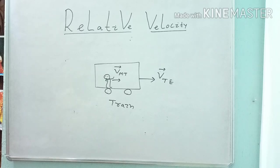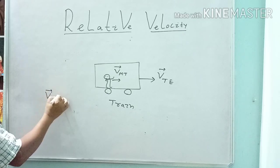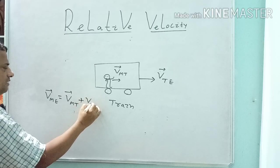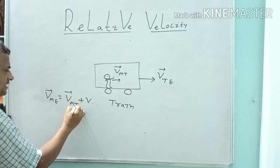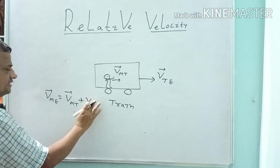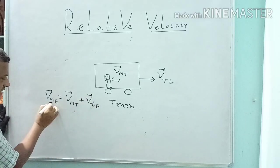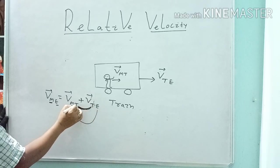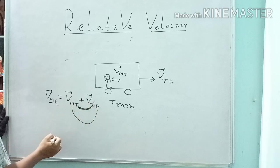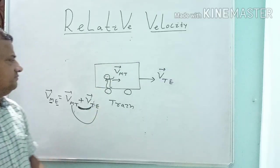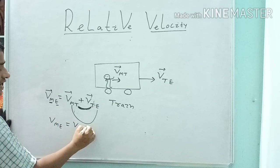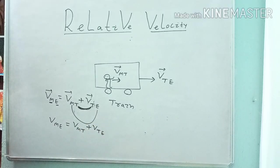So if you are told to find out the velocity of the person with respect to earth, VME = VMT + VTE. This is starting point, this is ending point, E is the middle. Since they are in the same direction, the velocity of the person with respect to earth equals velocity of person with respect to train plus velocity of train with respect to earth.